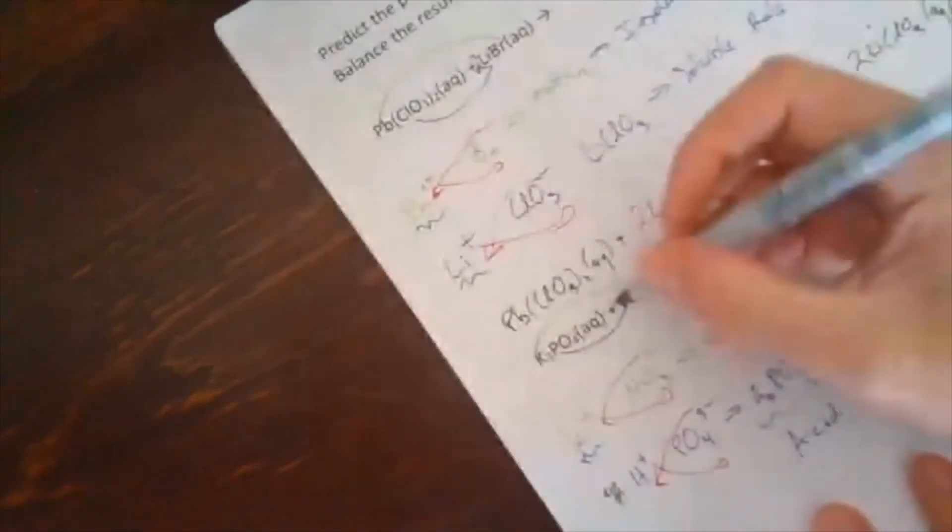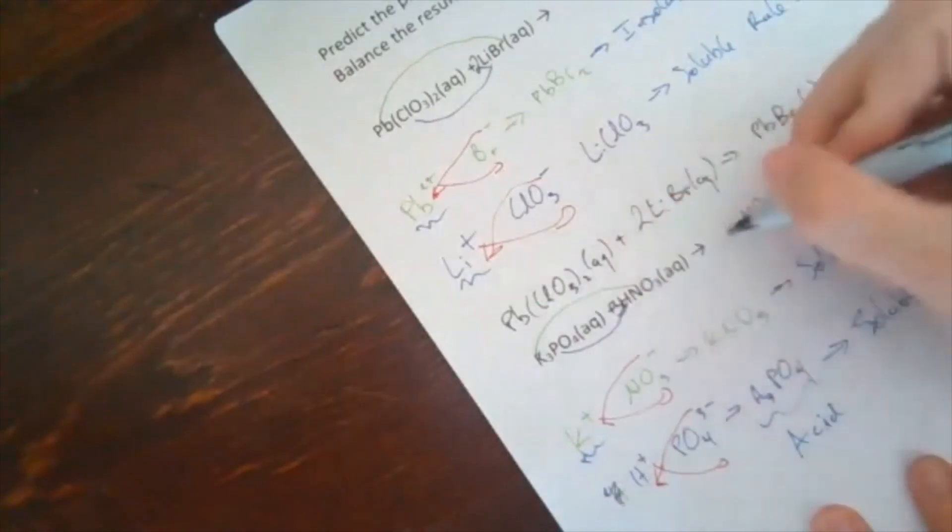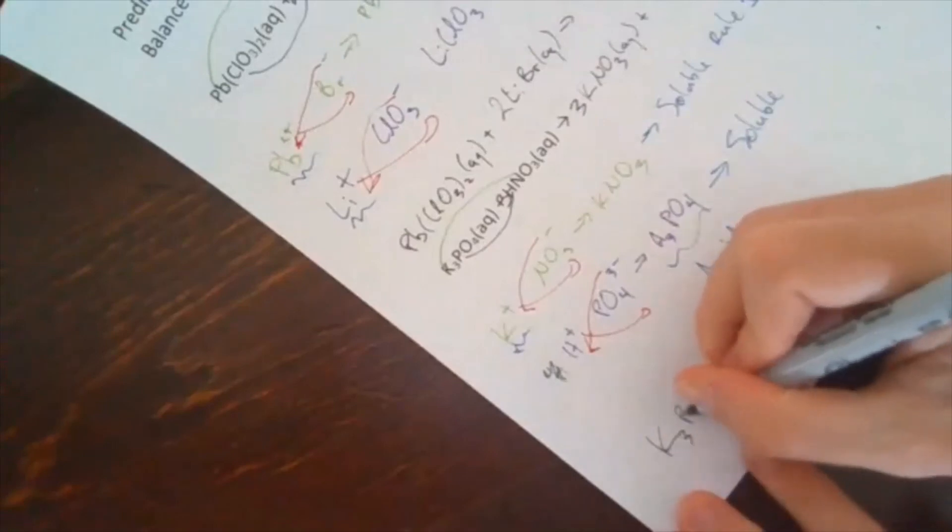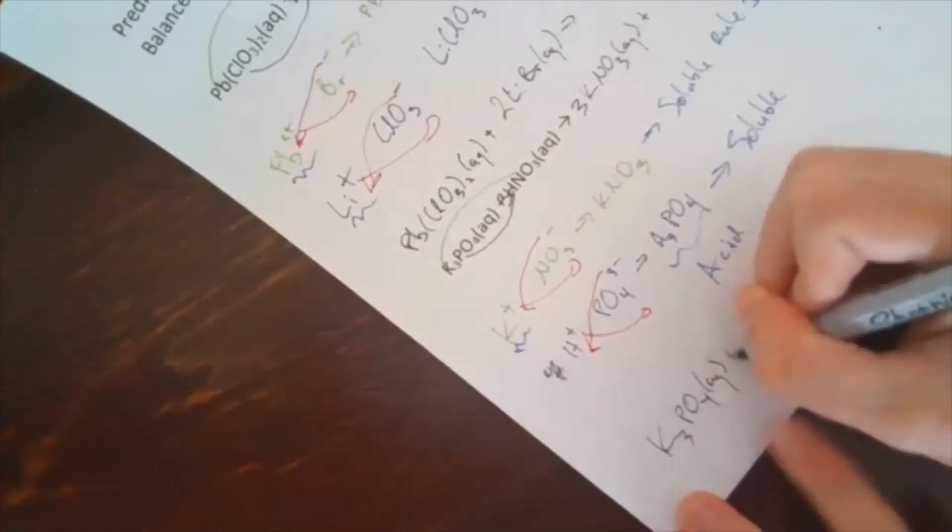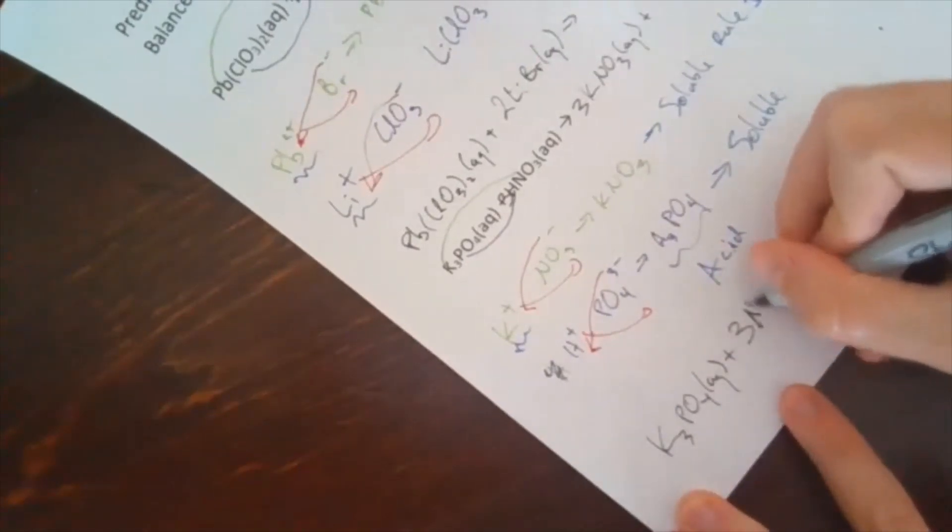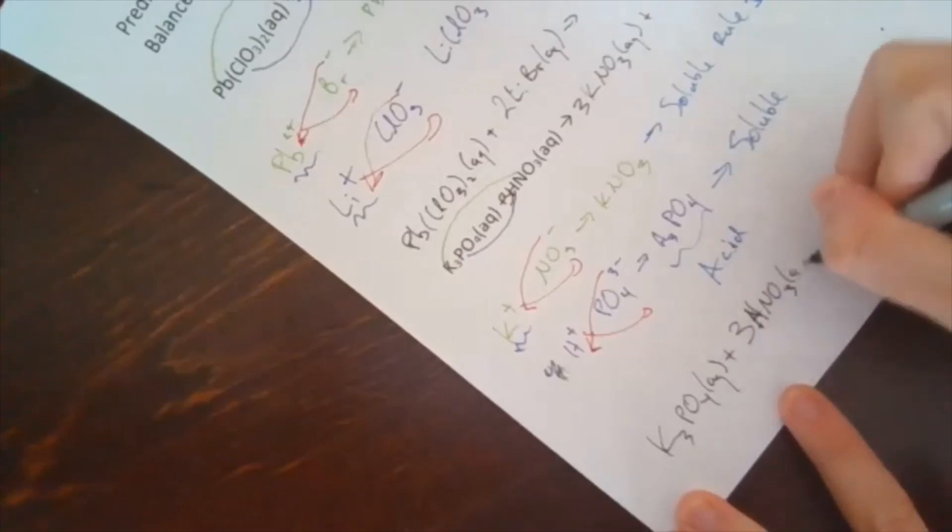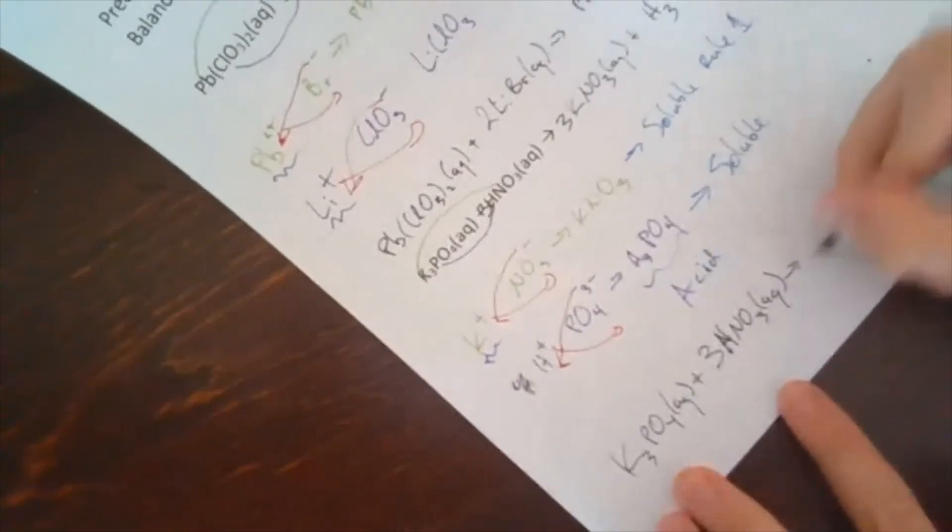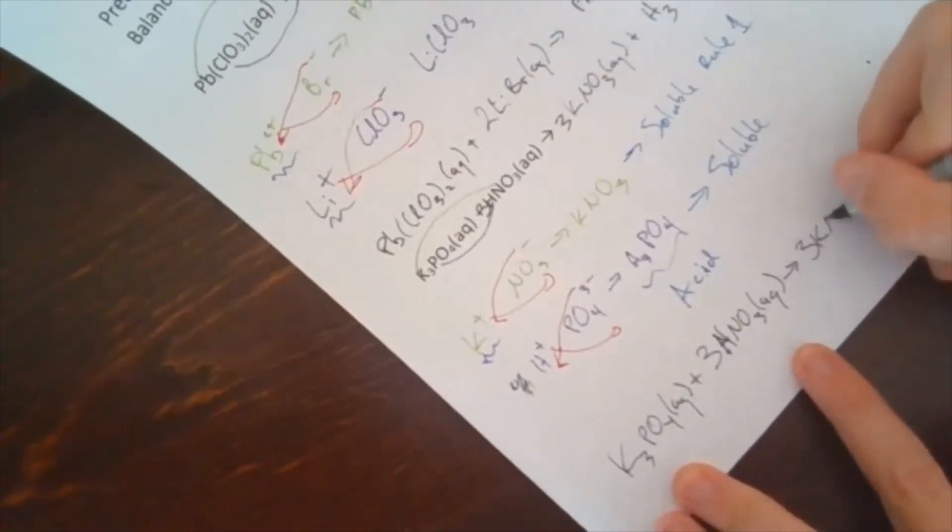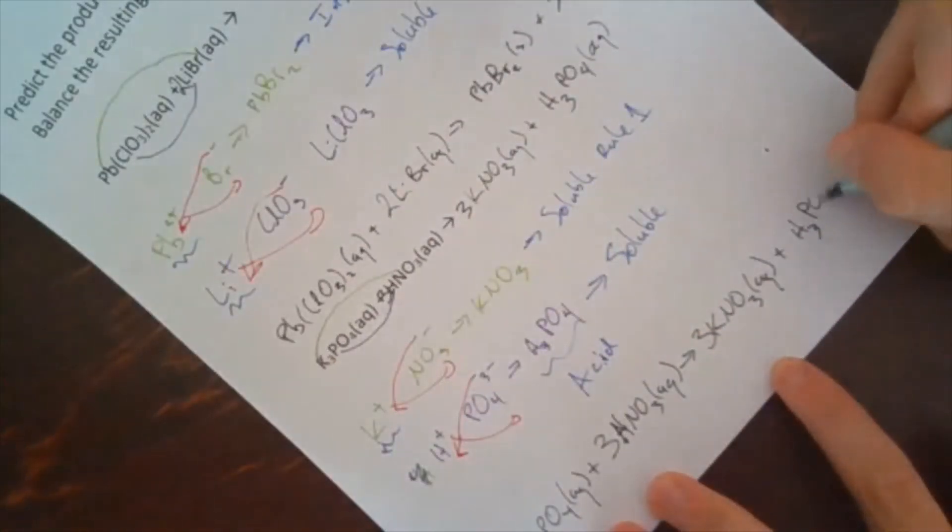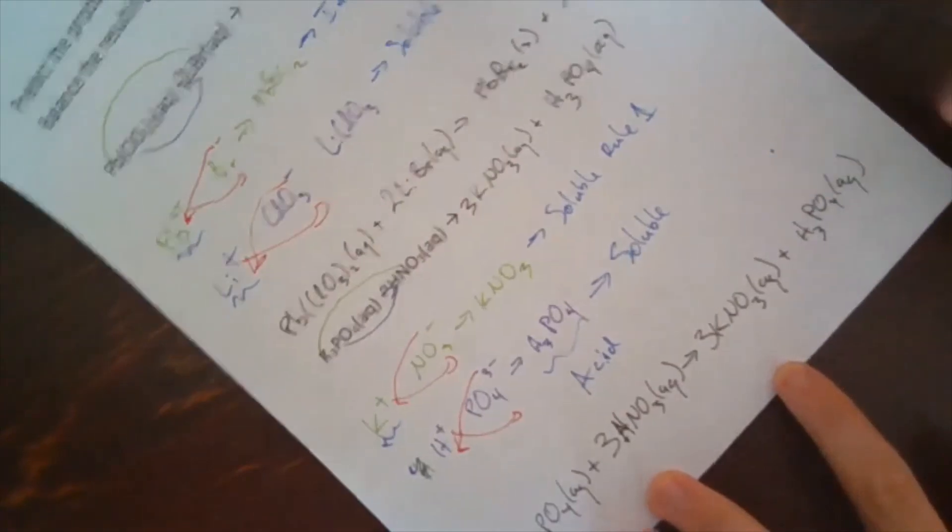Final step is going to be to balance. We need a 3 there and a 3. So overall I get K3PO4 aqueous plus 3HNO3 aqueous becomes 3KNO3 aqueous plus H3PO4 aqueous.